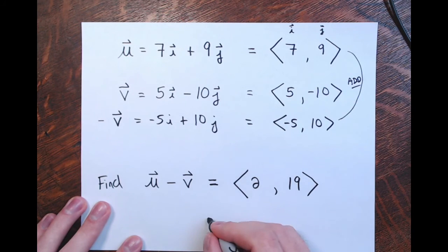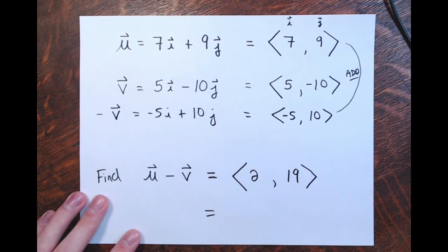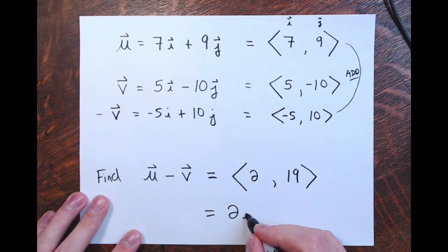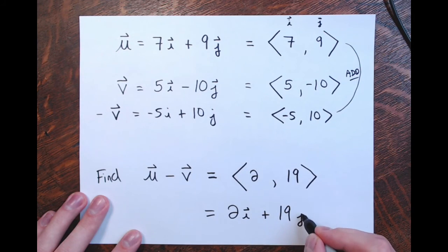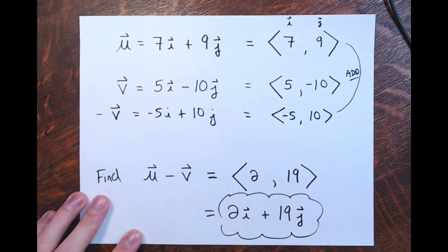If you had no wedge notation it would be like this, but you can very easily translate this back to that i and j notation. This would be 2 times vector i plus 19 times vector j. And this is how they want us to enter the answer.